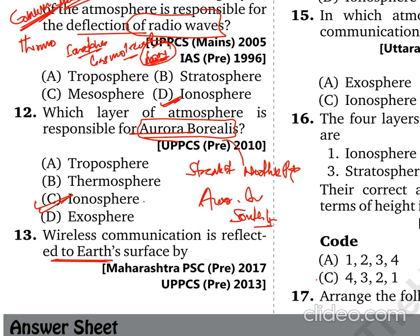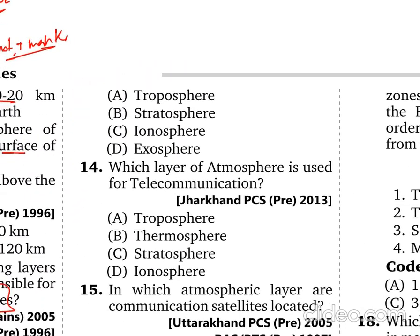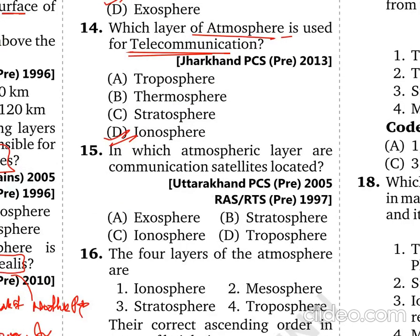Wireless communication is reflected to the Earth's surface by the Ionosphere. The Ionosphere is the layer used for telecommunication. Communication satellites are mostly located above the Kármán line, around the Exosphere — where space begins. Geostationary satellites are located at a height of 36,000 km above the Earth.